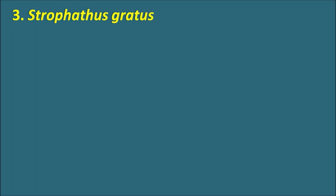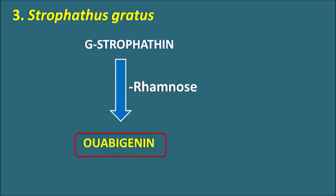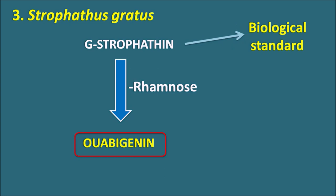Strophanthus gratus contains G-strophanthin as a primary glycoside, also called ouabain, from which rhamnose is removed as the sugar moiety to give the aglycone ouabagenin. G-strophanthin is used as a biological standard for cardiotonic activity.